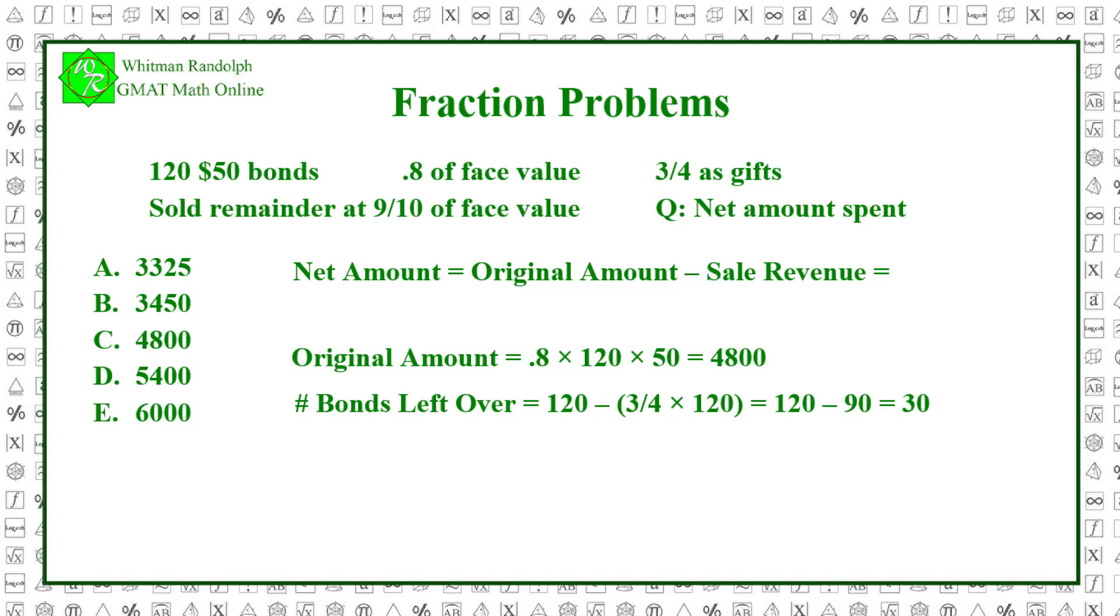Next, we calculate the amount she received from selling the bonds that were left over. Sale revenue from leftover bonds equals nine-tenths times 30 times 50, which equals 1350.